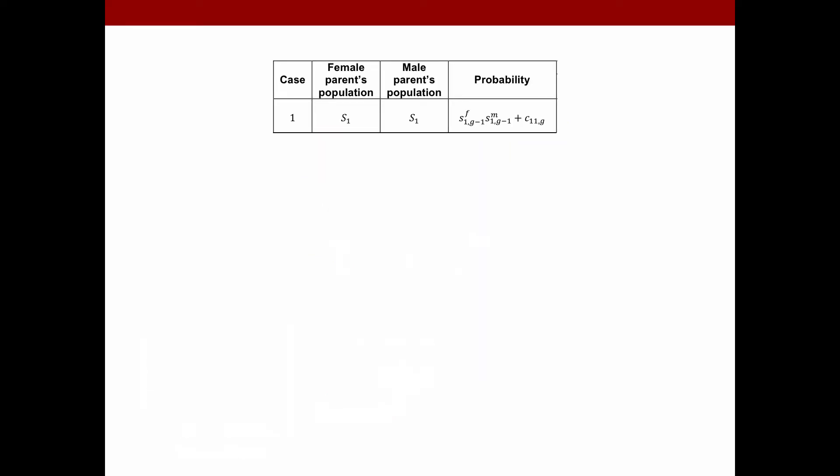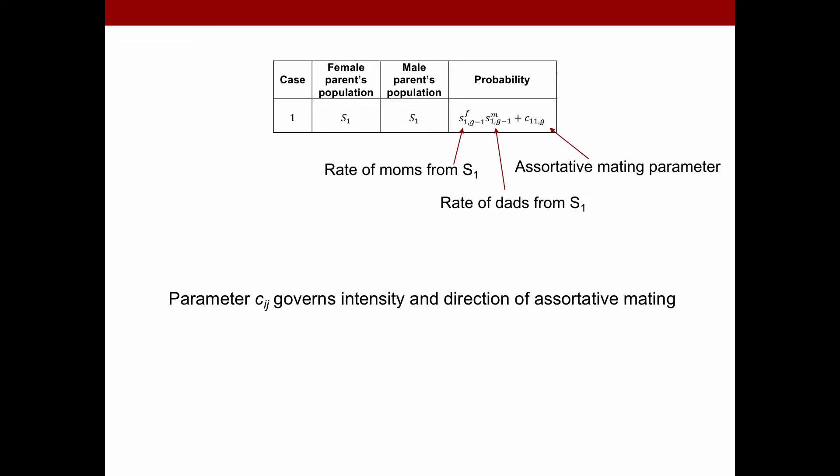We can calculate exactly what that distribution should be. For example, looking at the probabilities of all the mating pairs. We have three populations that the parents can come from, source one, source two, or the hybrid population. Going through one example, if we have both parents from source population one—in this column, source one is the mom, source one is the dad—you'll have a probability of parental pairing initially, like random mating, where you have just the frequency of moms from S1 times the frequency of dads from S1. And then we add this assortative mating parameter, which is the Cij.